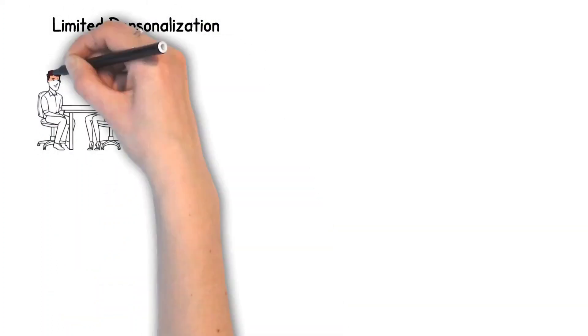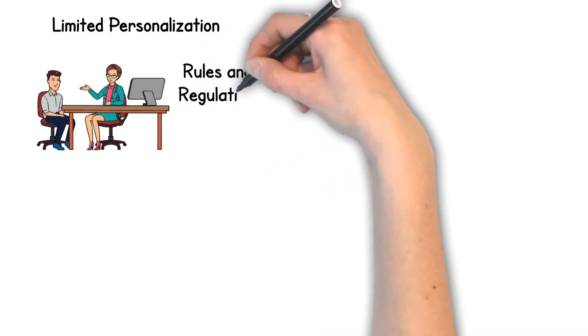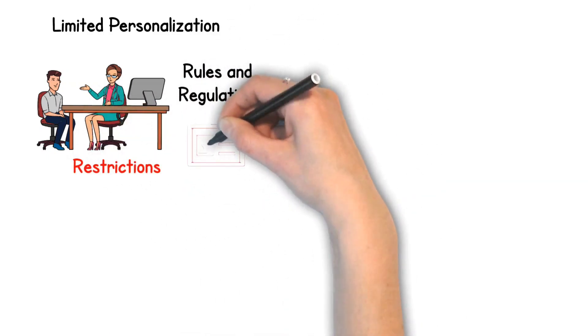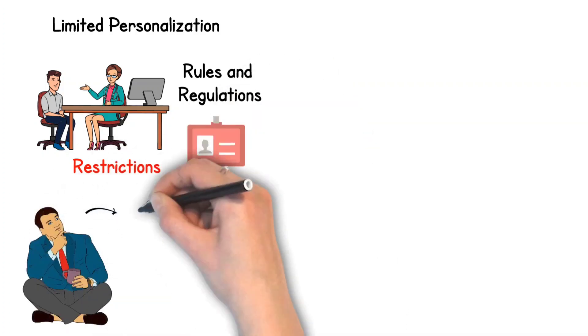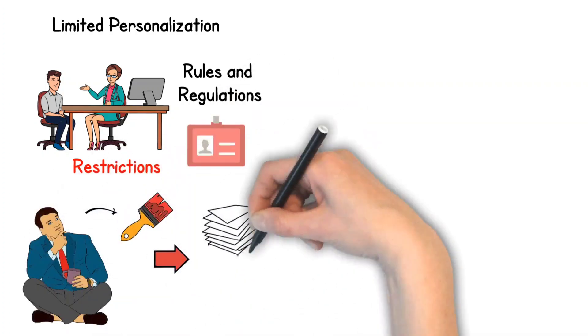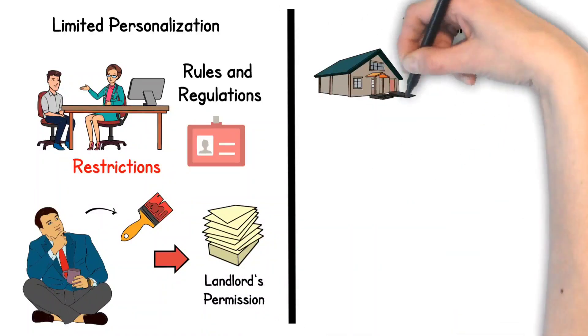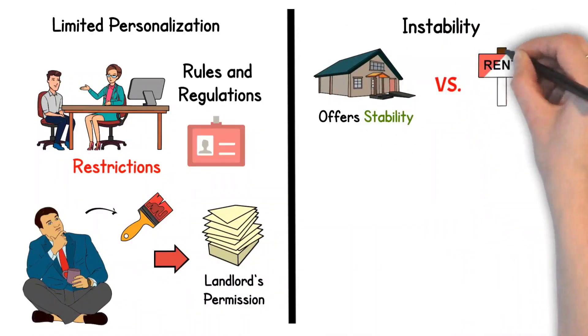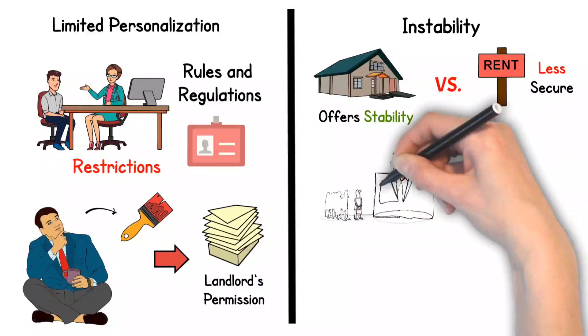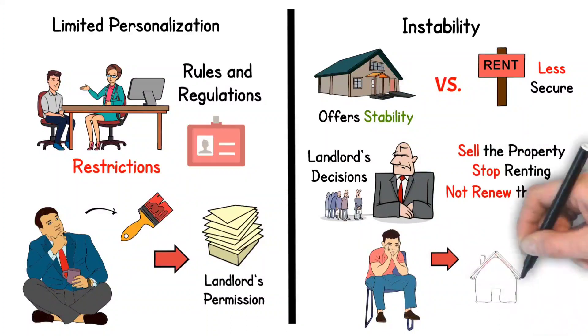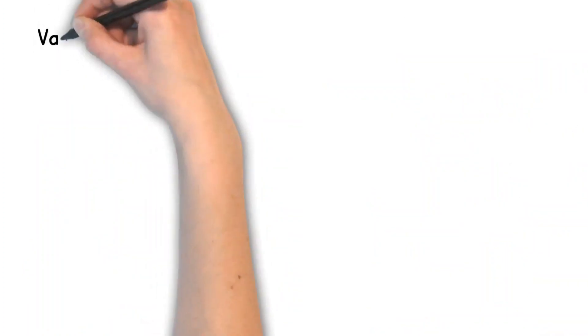Limited personalization. Renters are subject to the rules and regulations set by their landlords. This often means restrictions on how much you can personalize your living space. Want to paint the walls a new color or replace the old carpet? You'll need the landlord's permission. Instability. While homeownership offers stability, renting can be less secure. You're at the mercy of your landlord's decisions. They could decide to sell the property, stop renting, or not renew your lease, requiring you to find a new place to live with relatively short notice.